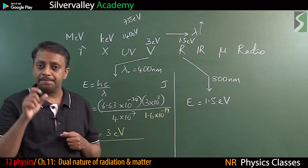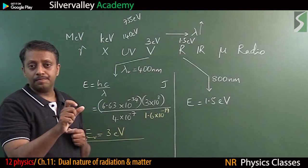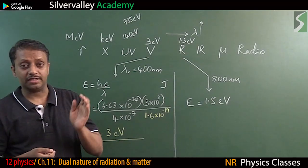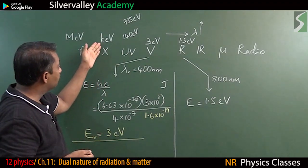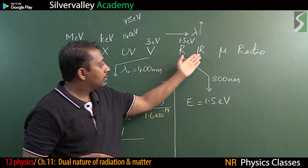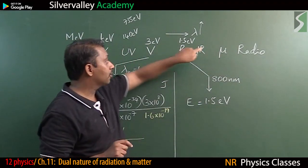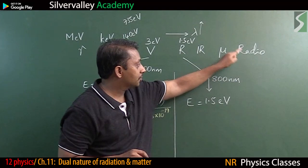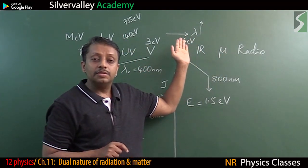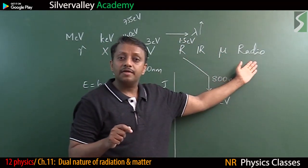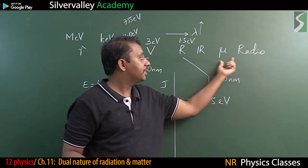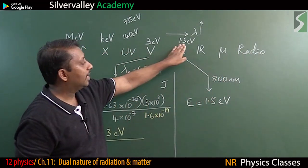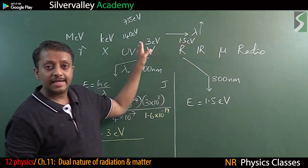This is how we identify the part of the electromagnetic spectrum based on energy. Earlier in high school we identified based on wavelength, but now we use electron volts. For infrared, microwaves, and radio waves, since their energy is much less than 1.5 eV, we prefer to use frequency. For the higher-energy radiations — ultraviolet and above — we use electron volts.